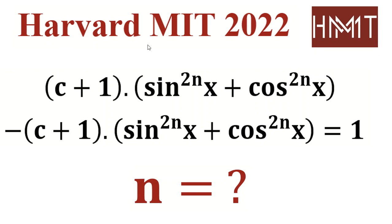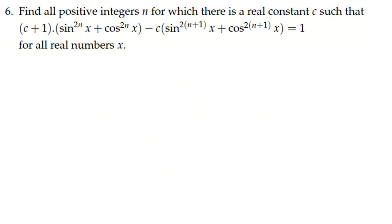Harvard MIT Mathematics Tournament team selection 2022, problem number six. The problem is: find all positive integers n for which there is a real constant c such that this equation is satisfied for all real numbers x. This idea is useful from qualifying level of any country math olympiad up to IMO, the most prestigious one.